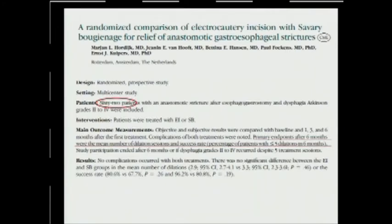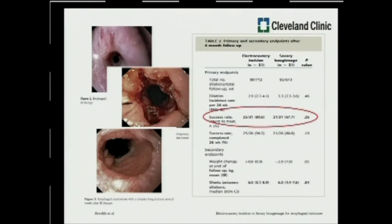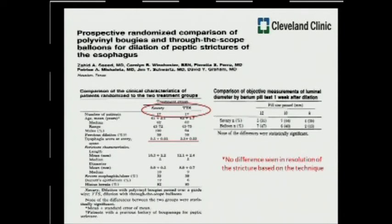One trial looked at 62 patients with post-esophageal surgery strictures, comparing bougies with electrocautery — specifically using a needle knife to incise the anastomosis circumferentially with small 4-millimeter cuts. As with most of the literature, there was no statistical difference in success rate between the two techniques. Trials comparing bougies versus CRE through-the-scope balloons, with 17 patients in each arm, found the same result: no difference in resolution of strictures in peptic disease.